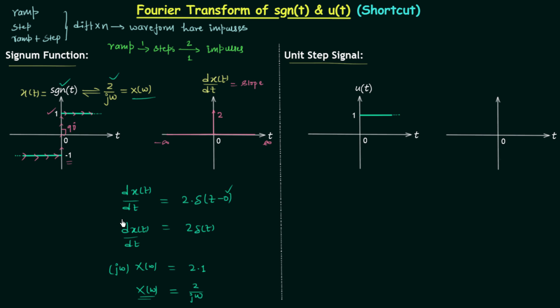The process is very easy. We have obtained the Fourier transform of the signum function easily and in very little time. If you compare this to the earlier lecture where we computed it the conventional way, that process was complicated and time consuming. Now we move to the second example.